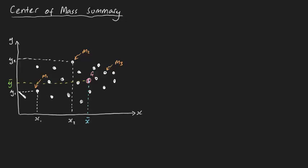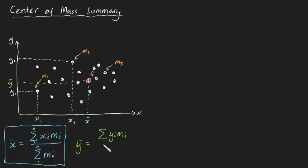The center of mass is defined by the following formulas: x-bar is equal to the sum of ximi, all divided by the sum of mi, and y-bar is equal to the sum of yimi divided by the sum of mi.